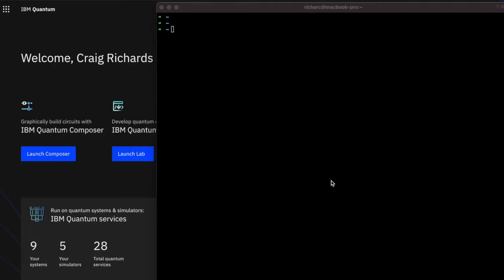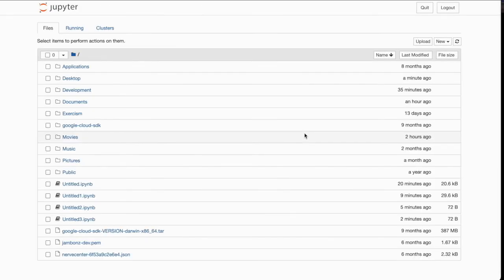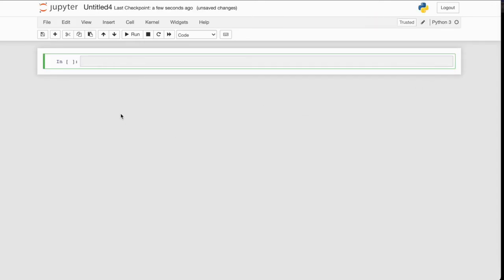For our Qiskit version of Hello Quantum World, we first need to run a Jupyter Notebook. So let's do that now. From the Jupyter launch page, let's go over to New and let's launch a new Python 3 notebook. So to create our quantum circuit, we first need to import some libraries from Qiskit. So from Qiskit import, support quantum circuit, and assemble.